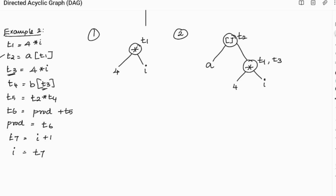And now we put t3 in array b and assign to t4. So t3 is this computation. And we have to assign this in square brackets, that is array b. So b of t3 gets assigned to t4. So the steps are over till this.